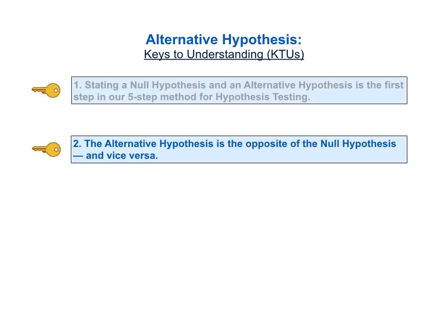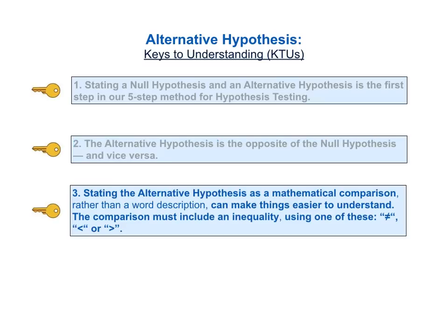The second key to understanding is the alternative hypothesis is the opposite of the null hypothesis and vice versa. The third KTU is stating the alternative hypothesis as a mathematical comparison, rather than in words, can make things easier to understand. The mathematical comparison must include an inequivalence in the comparison operator using one of these: a not equals sign, a less than sign, or a greater than sign.